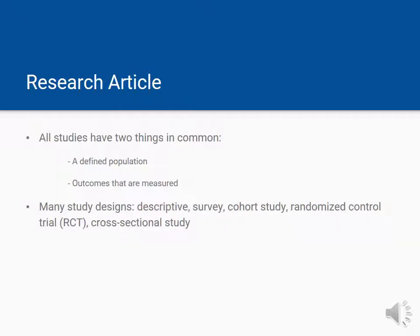All research articles or studies will have two things in common. They will have a defined population, for example, a group of people who are suffering from the same disorder, and an outcome that they measure for the study, such as if a particular drug is effective at treating a certain disease. There are many different study designs. They range from descriptive to cross-sectional studies or randomized controlled trials. Each is unique in terms of how the design is set up, but are defined as being a research article because they have a defined population and outcomes that are measured.